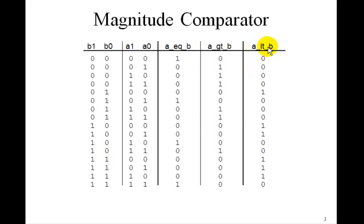A less than B will be 1 if A is less than B. Well, 0 is less than 1, 0 is less than 2, 1 is less than 2, 0 is less than 3, 1 is less than 3, and 2 is less than 3. So that's how we get the truth table. And again we'll just draw Karnaugh maps to find the logic equations for A equal B, A greater than B, and A less than B.